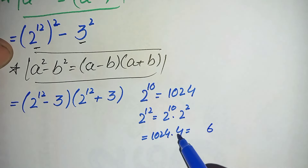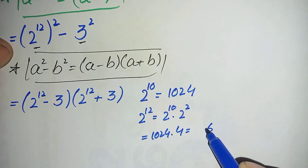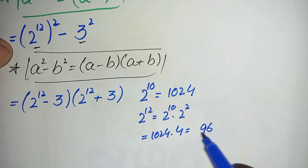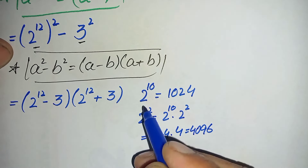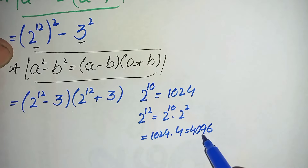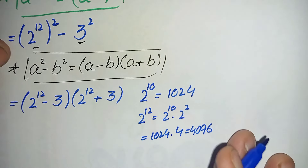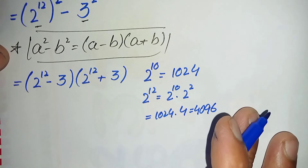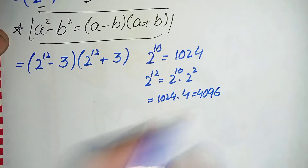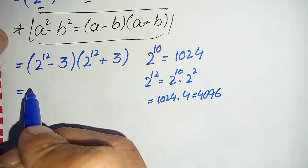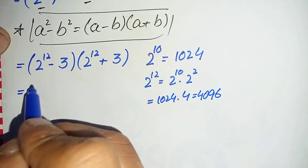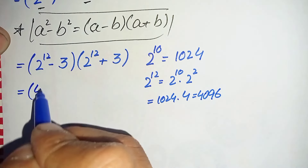So 4 times 4 is 16, 1 will be carried; 4 times 2 is 8, plus 1 is 9; 4 times 0 is 0; and 4 times 1 is 4. So 2 raised to power 12 is equal to 4096.